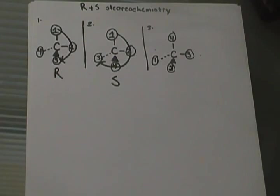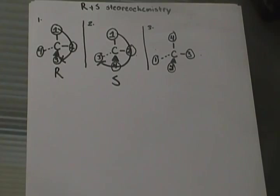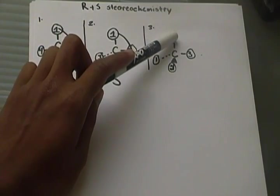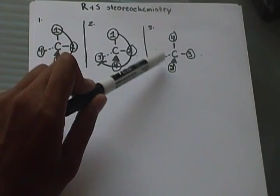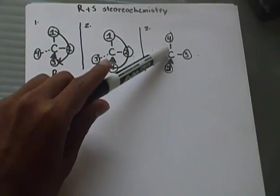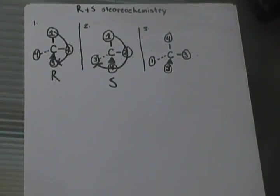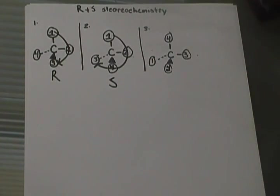Moving on to the next example — that's when the fourth group is in the plane, and that is definitely the most tricky. But with practice, it's not difficult. What you have to do is take the fourth group and switch it with either the group that's going into the page or the group that's in the plane. Then you draw your curved line going from one to two to three, and whatever stereochemistry that is, you're going to reverse it.